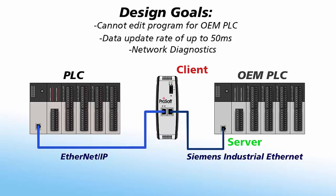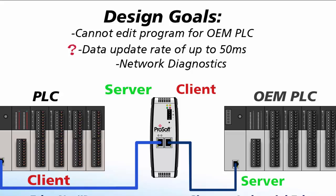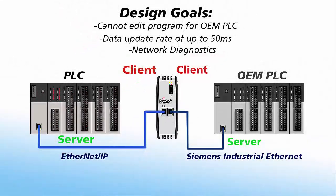When our gateway's port is configured as a client, it has a poll rate that sets your communication update interval and does not get sent at a lower priority like a PLC client message. This gives you fast, consistent communications. Like before, we could use message instructions in our PLC acting as a client to communicate to the gateway as a server, but our EtherNet/IP communication speeds will be dependent on the timing of the PLC's ladder code and any other EtherNet/IP communications that may be going on. Getting data transfers in under 50 milliseconds could be difficult. To avoid using message instructions, we could configure our gateway as a client on the EtherNet/IP side and the PLC as a server. This would eliminate the dependency on ladder logic timing and would also not require program changes.